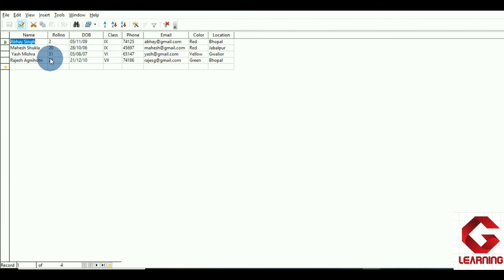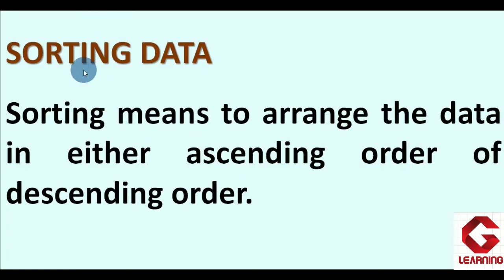Now moving to the next topic: sorting data. Sorting means arranging data in ascending or descending order. Sorting is possible in database tables as well. I am going to show practically how sorting works in an OpenOffice Base table, using the same student_info table.